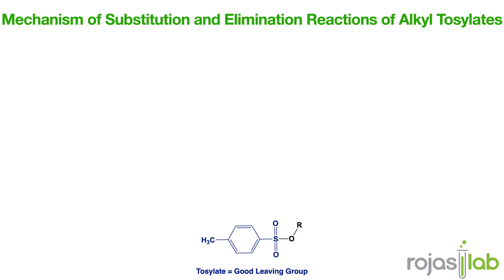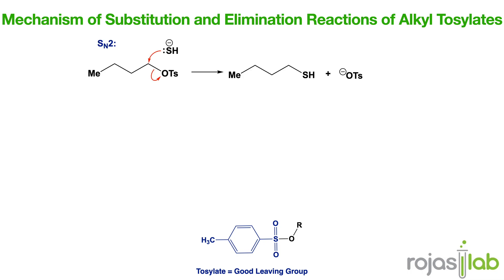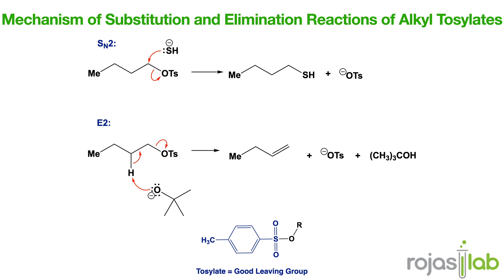There are other ways to make alcohols better leaving groups. One of them is the formation of tosylates, which serve as excellent leaving groups for SN2 and E2 reactions. In the mechanism, the alcohol is first converted to a tosylate using tosyl chloride and pyridine. Tosylates can undergo substitution or elimination depending on whether you're using a base or a strong nucleophile. In the SN2 reaction you get inversion of stereochemistry, and in the E2 mechanism you get anti-elimination.